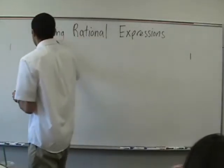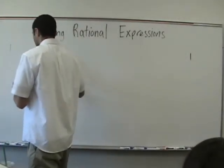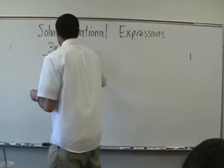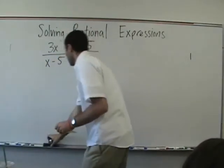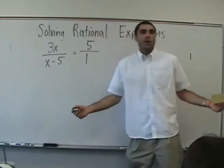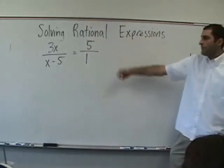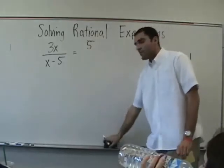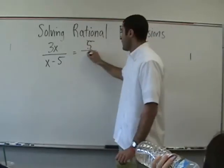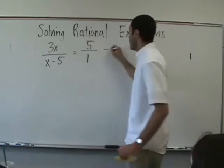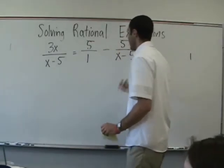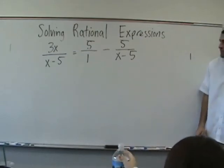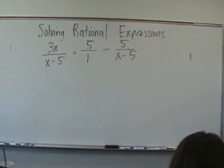It's going to happen again for the next three problems. 3x over x minus 5 equals 5 over... Oh, 5 over nothing. 1. 5 over 1. The problem will give you 5. Okay. So just write it over 1. Okay. 5 over 1. Minus 5 over x minus 5. Again. Okay. Same concept. What would you like the common denominator to be?